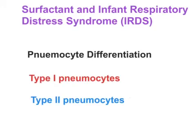Hello everyone, Dr. Mungle here. In this video I will be explaining surfactant and infant respiratory distress syndrome. Note that surfactant is synthesized and secreted by type 2 pneumocytes, and pneumocyte differentiation will be going on